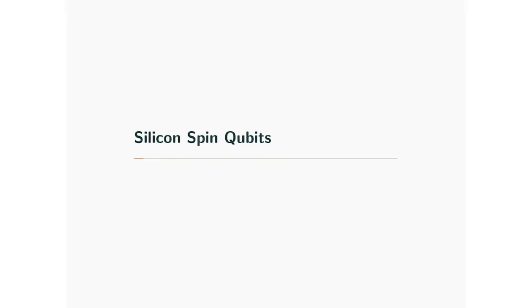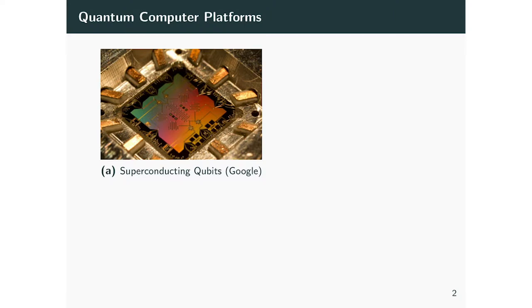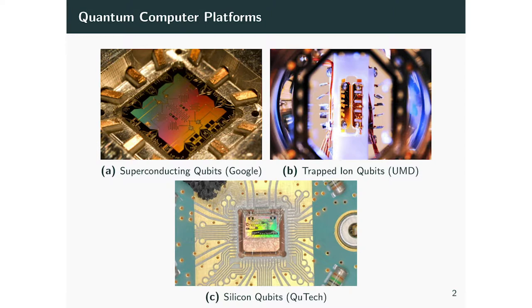So first of all, what is silicon spin qubits? In case you missed Jelma's excellent introduction on Monday, I will just briefly talk about silicon spin qubits here. There are various kinds of quantum computer platforms. You are more familiar maybe with superconducting qubits — here's a picture from Google — or trapped-ion qubits — here's a picture from UMD. And now I'm going to talk about silicon qubits, with a picture from Qtech.